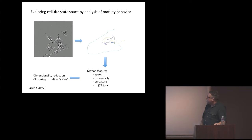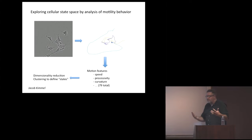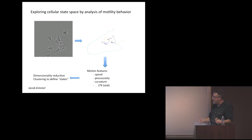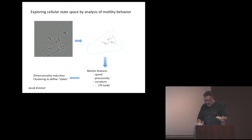We had a project to understand cell behavior using behaviors to infer states. This is the work of a great student, Jacob Kimmel. He watched fibroblast cells — cells that move around the body and deposit structural proteins — moving on a dish and analyzed their motion. He recorded live images of thousands of cells, looked at trajectories, and featurized them: turning angles, persistence, velocities, and so on, ending up with 79 features.